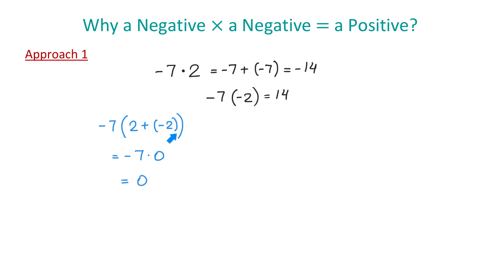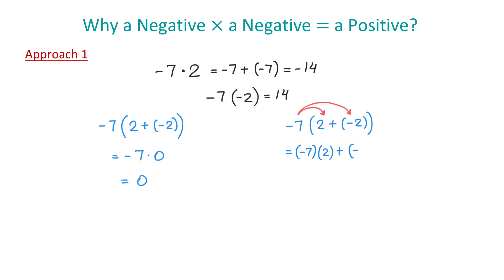Now, let's write this expression to the right one more time. So, we have negative 7 times the quantity 2 plus negative 2. This time, let's simplify this expression using the distributive property. First, we will multiply negative 7 by 2, and again negative 7 by negative 2. So, we will write negative 7 times 2, plus negative 7 times negative 2.